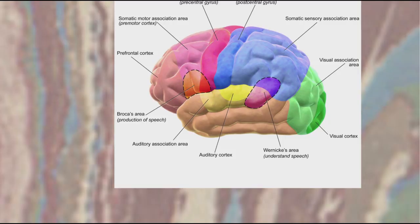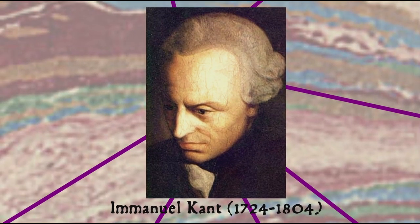Swedenborg was also purported to have clairvoyant abilities, once in a sudden outburst accurately describing a dangerous fire near his house in Stockholm while dining with a friend three hundred miles away. Later in the meal he exclaimed, 'Thank God the fire is extinguished, the third door from my house!' The philosopher Immanuel Kant became quite interested in Swedenborg's alleged psychic abilities, and initially praised them and began reading Swedenborg's theological works, but later backpedalled and criticised his work.